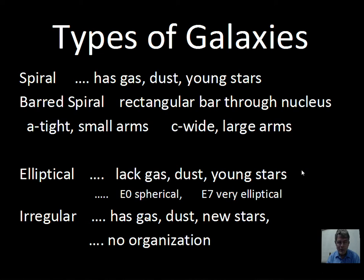There's another type of spiral — the barred spiral — that has a more rectangular shape that goes through the nucleus, through the center of the galaxy, and then spiral arms generally coming off from the ends of that rectangular structure.